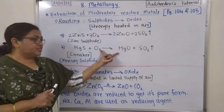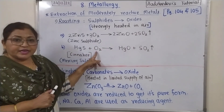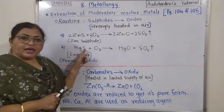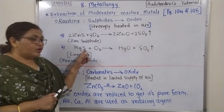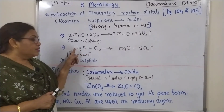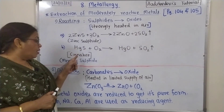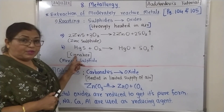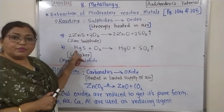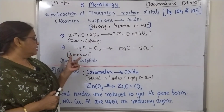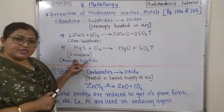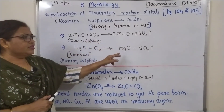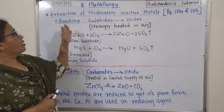Practice and balance this reaction from the textbook. HgS is mercury sulfide — the ore of mercury is called cinnabar, its chemical formula is HgS. The same roasting reaction applies; try to balance it yourself.